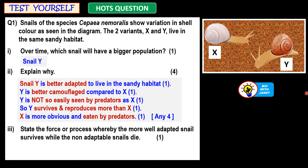Y is not so easily seen by predators as X. So Y survives and reproduces more than X, whereas X is more obvious and eaten by predators. Any four out of these five points will get you the four marks. In this question we are talking about camouflage.